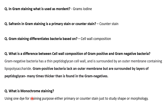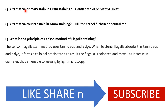What is monochrome staining? For quickly studying the shape or morphology of bacteria, we use monochrome staining, which uses only one dye. We let the dye react, wash the slide, and view it under the microscope — no counter stain is used. The alternative primary stain in gram staining is gentian violet or methyl violet. The alternative counter stain can be diluted carbol fuchsin or neutral red.